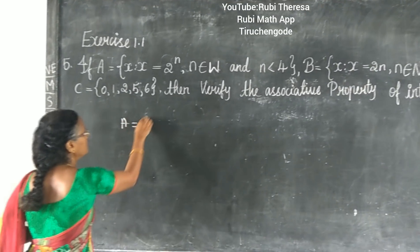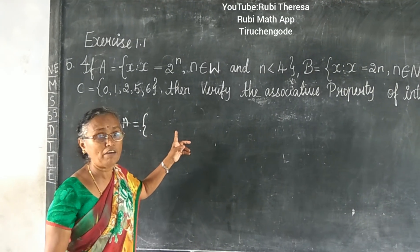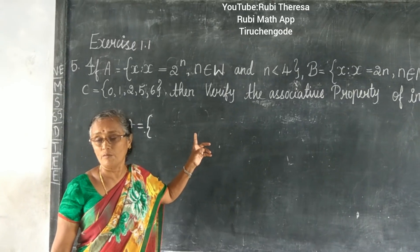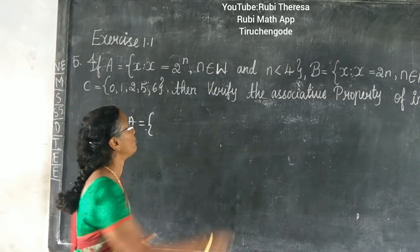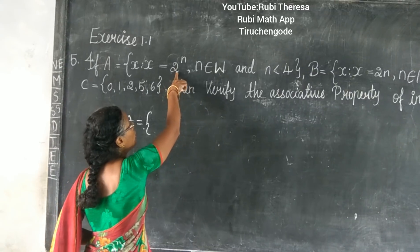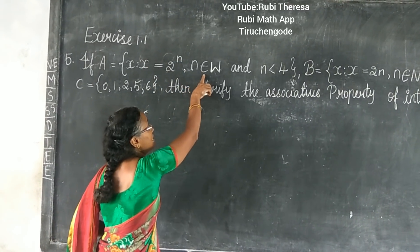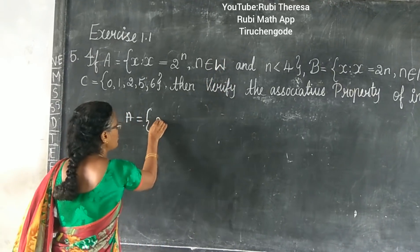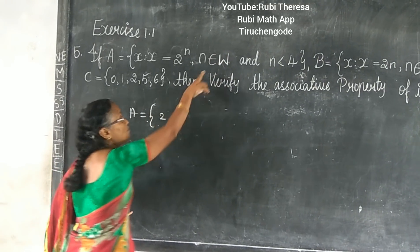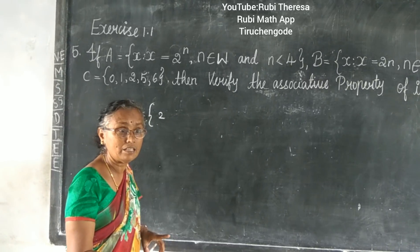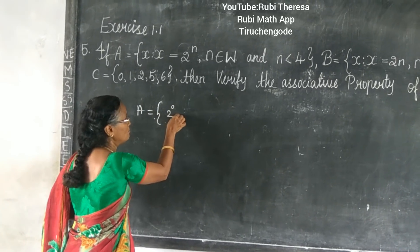A is equal to — you can give the elements in roster form. Just convert the set builder form into roster form: 2 to the power of N, where N is an element of W. So, in place of N, you want to start with 0 since W means whole numbers starting with 0. So, 2 to the power of 0.